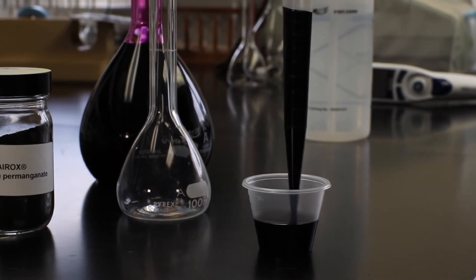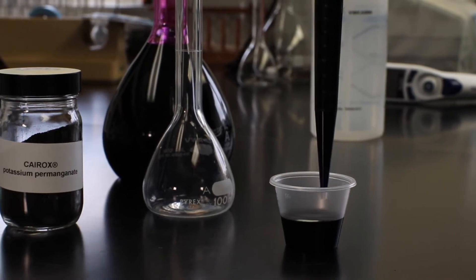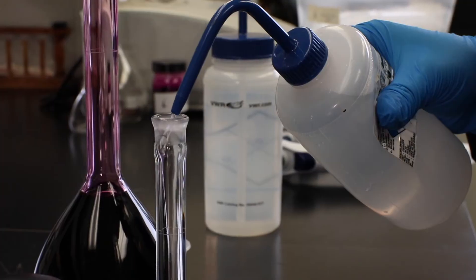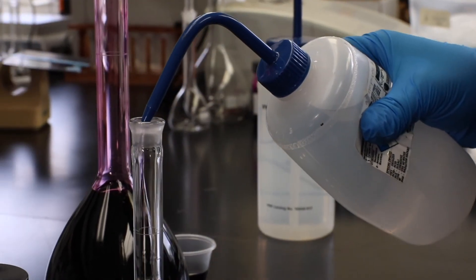Pipette 10 milliliters of the 1% potassium permanganate stock solution into a 100 milliliter volumetric flask and dilute with distilled water to 100 milliliters.